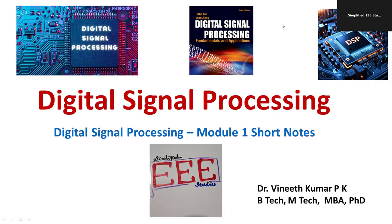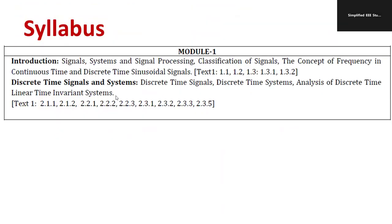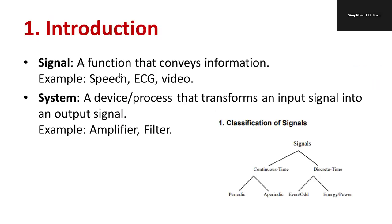Module 1 is an introduction to signal processing. You will study different types of signals, definitions of signals, types of systems, and the comparison between continuous and discrete time signals. You will also learn about discrete time systems, analysis of discrete time systems, and convolution. These are the very basics of Module 1.